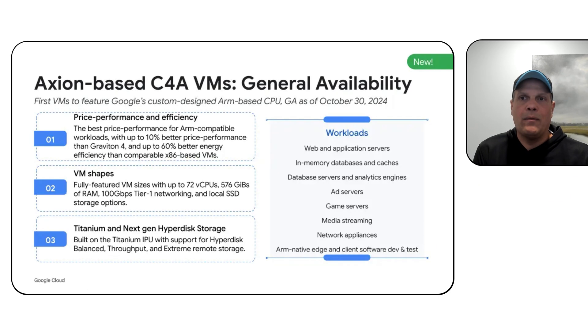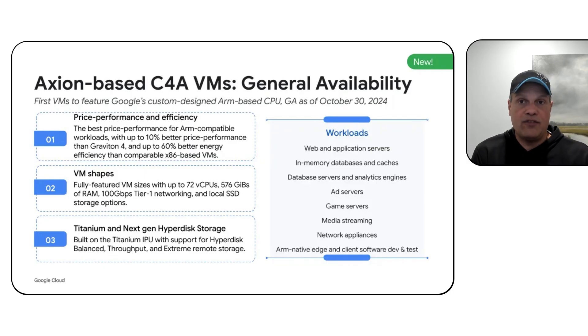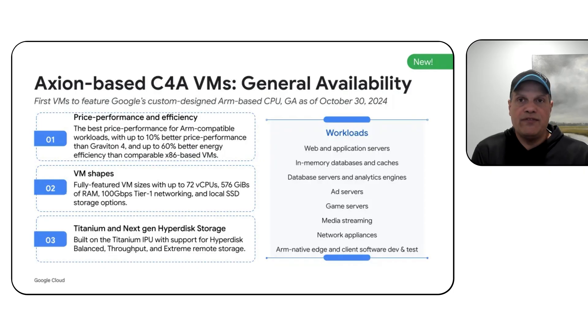We recently released the C4A machine type, our latest generation ARM processors, taking ARM more mainstream in Google Cloud. This is available on both GKE Standard and GKE Autopilot, and is great for single-threaded or single-core applications where price-per-core performance matters. It's available in most regions today and is super easy to use.